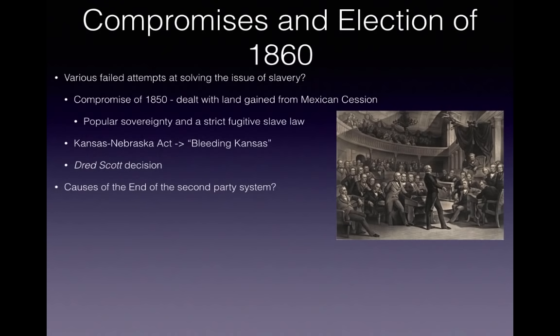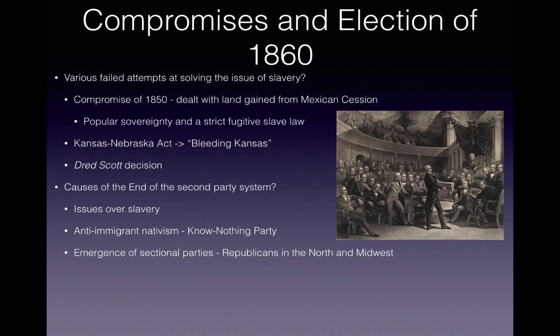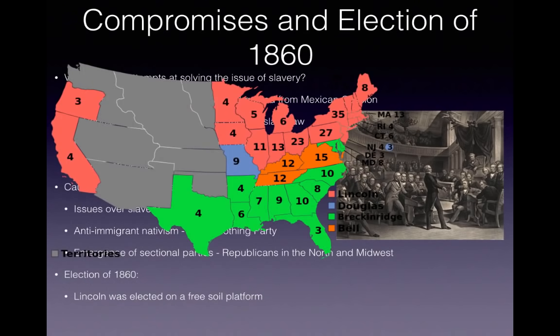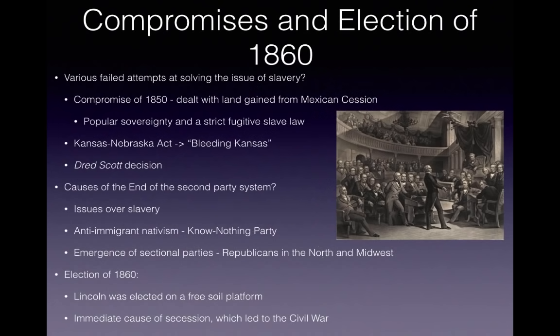The second party system — the Whigs and the Democrats — ended due to issues over slavery and anti-immigrant nativism. Think of the Know-Nothing Party. We see the emergence of sectional parties, especially Republicans in the North and Midwest. Please know that the Republicans started as a sectional party. In the election of 1860, Lincoln wins — he was elected on a free soil platform, meaning slavery would not expand beyond where it already existed. This is the immediate cause of secession. South Carolina secedes about a month later, ultimately leading to the Civil War.